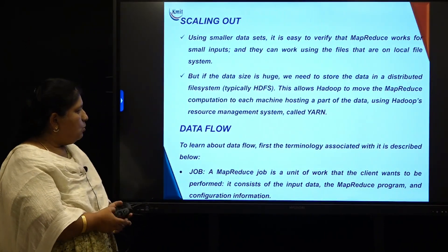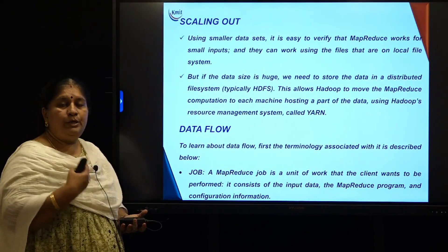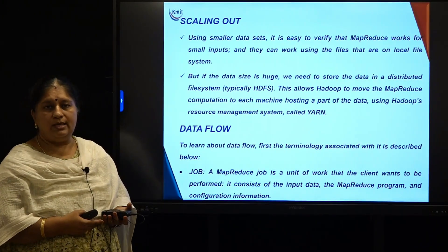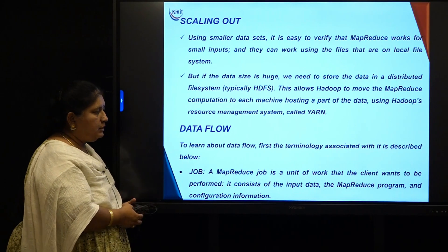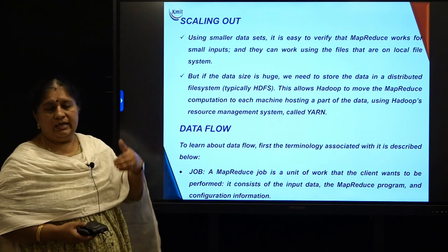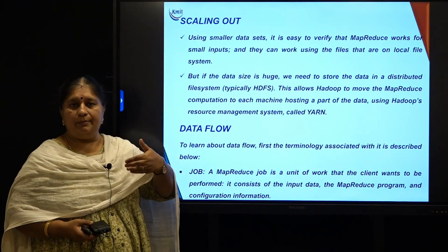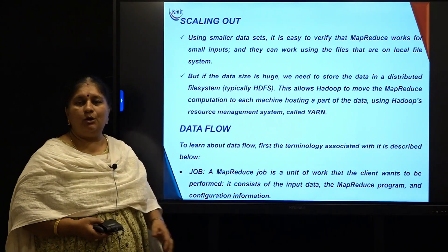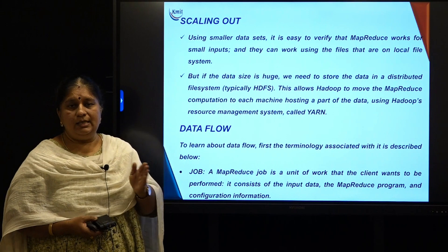The first term: what exactly do we mean by a job? The unit of work which we submit to MapReduce is called a job. So a MapReduce job is a unit of work which the client wants to be executed. It consists of input data, a user-written MapReduce program, and some configuration information. I will show this in one of the examples in a later session.